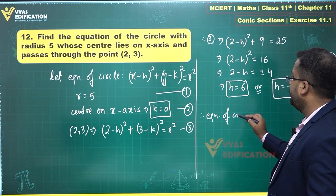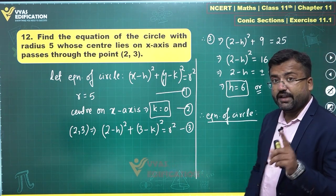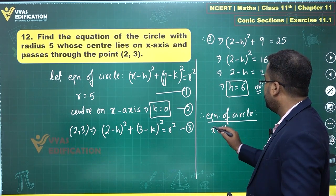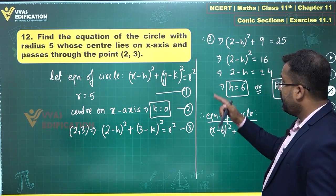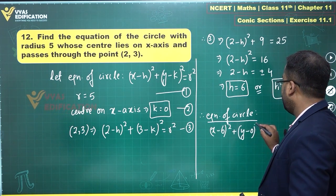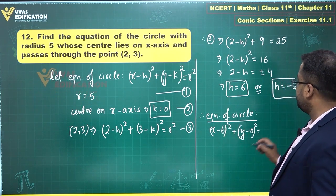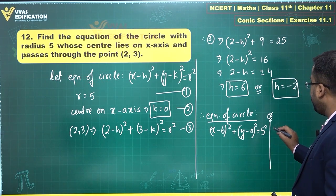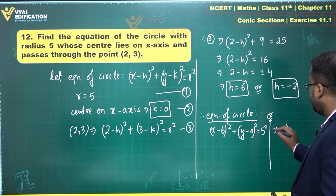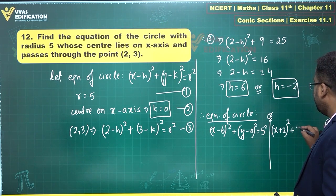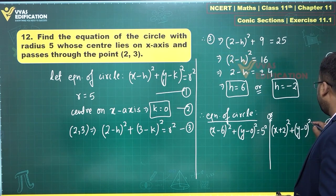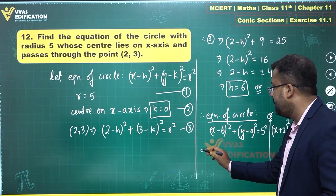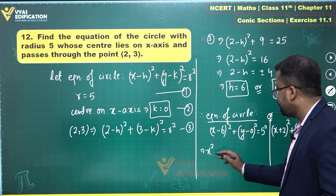Therefore the equation of the circle can be: using h equal to 6, it is x minus 6 squared plus y minus 0 squared equals 5 squared. Or, using h equal to minus 2, it is x plus 2 squared plus y minus 0 squared equals 5 squared.